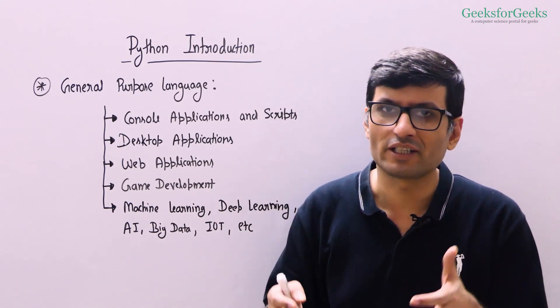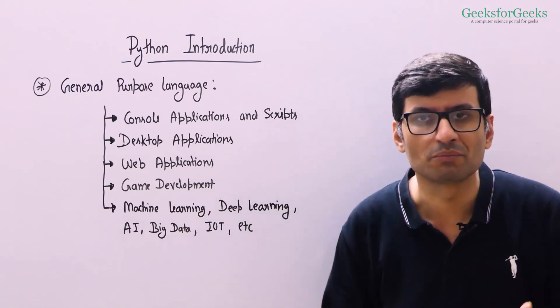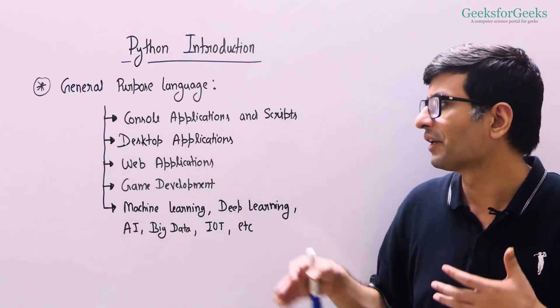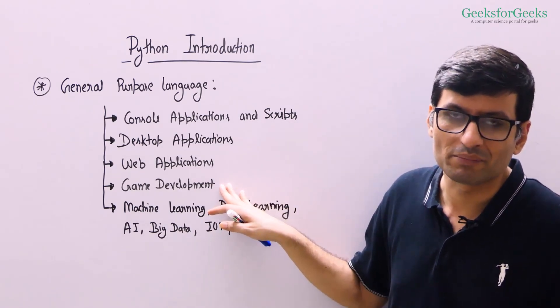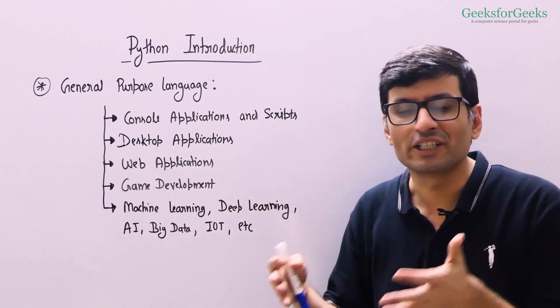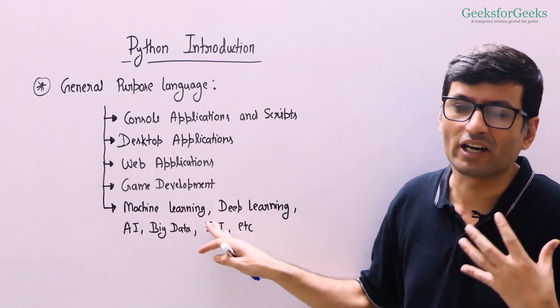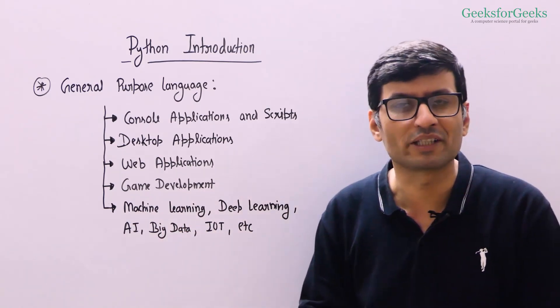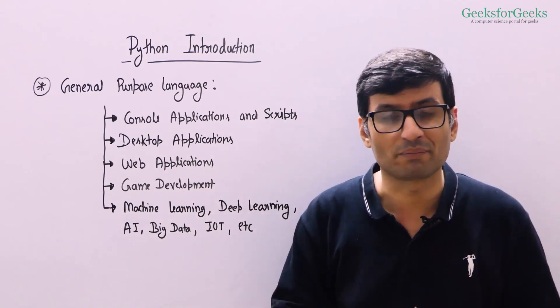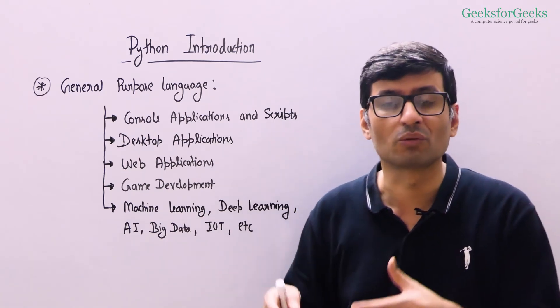Django allows you to quickly do web development and is one of the most used frameworks these days. You can do game development with Python, and you can do almost anything: machine learning, deep learning, AI, big data, IoT. All these kinds of applications can be built in Python. Python has rich libraries for almost everything.